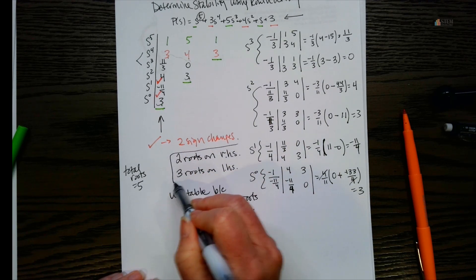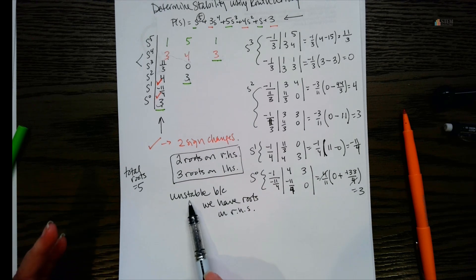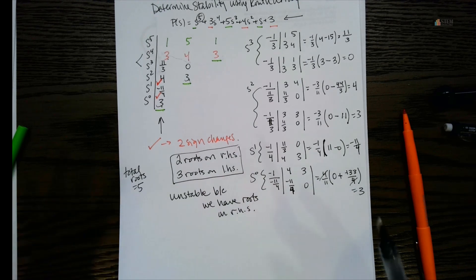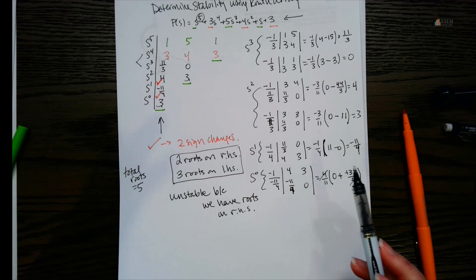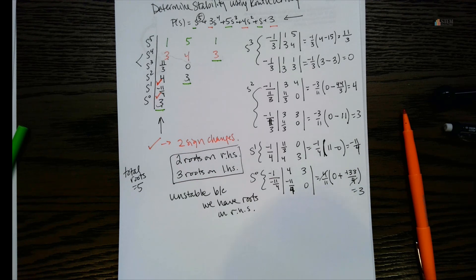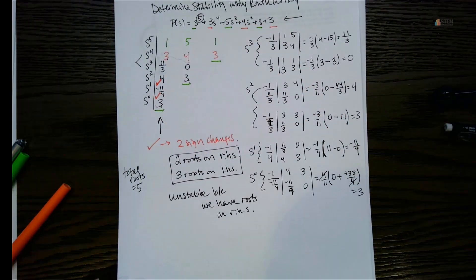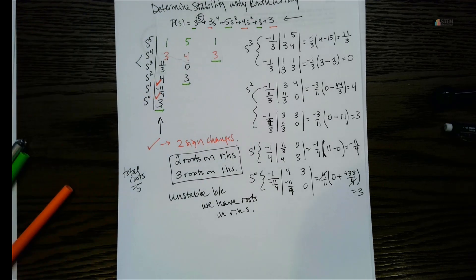This is typically what you'll be asked to find: how many roots are on the right-hand side versus the left-hand side, and whether the system is stable or unstable. This system is unstable. There are special cases for the Routh Array — such as roots on the imaginary axis — but those are covered in separate examples. For this standard case with no zeros in the first column, just look for sign changes.